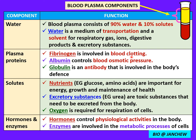When blood flows out or when a person is bleeding, the blood clotting mechanism will start to occur, and fibrinogen plays a big role in the blood clotting process. Another plasma protein is albumin, which helps to control blood osmotic pressure. Then there is globulin, which is an antibody — a chemical substance that helps to destroy pathogens or disease-causing microorganisms — and is involved in the body's defense.